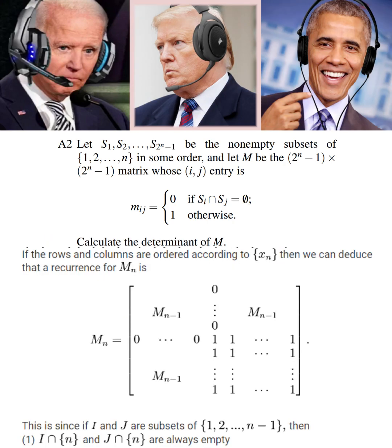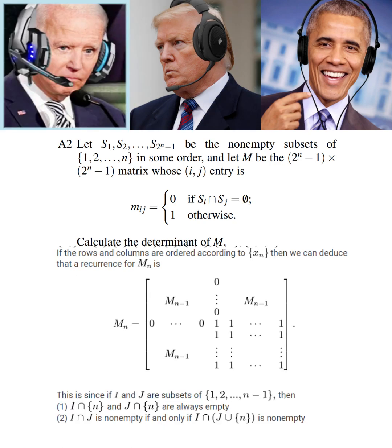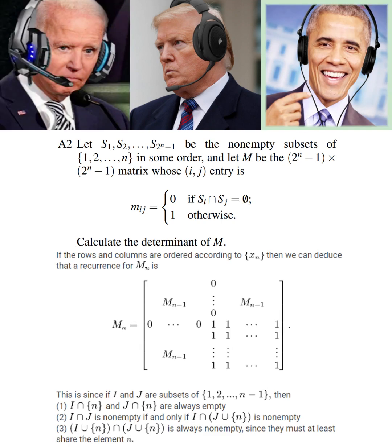Oh, are the row and column of zeros there because if I and J are subsets of the first N minus 1 positive integers, then I intersect N and J intersect N must always be empty? Yes, but that doesn't account for the other parts of the matrix. In particular, we can substitute in M sub N minus 1 because I intersect J is non-empty if and only if I intersect J union N is non-empty and vice versa. The block of ones on the bottom right corner is because I union N intersect J union N is always non-empty, since they must share at least the element N.